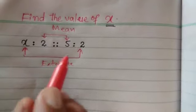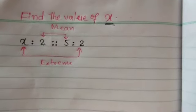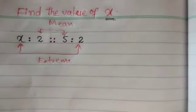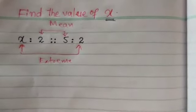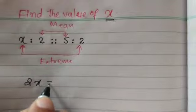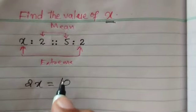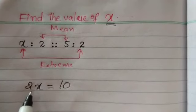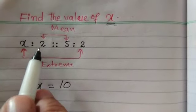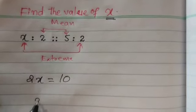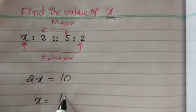That means, cross multiply. 2x is equal to 10. Means, 2 and x multiplied is equal to 2x, which is equal to 2 and 5. That means, 2. And hence, x is equal to 10.